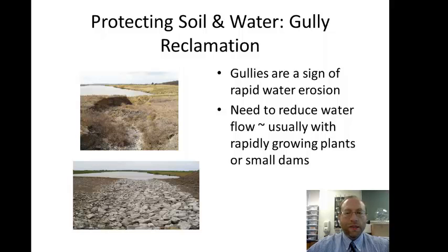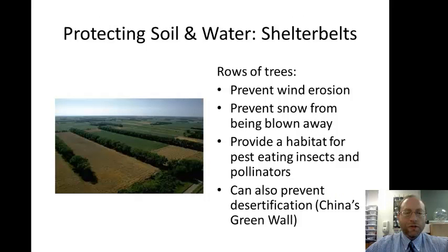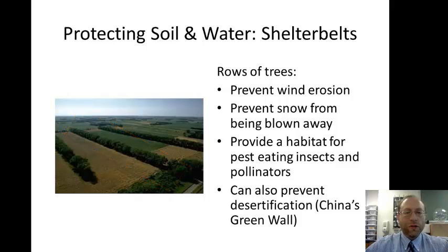When erosion creates gullies—a sign of rapid water erosion—reclamation is important. This can be done by planting rapidly growing plants, building small dams to slow water flow, or literally filling in the gully. Shelter belts are rows of trees that prevent wind erosion, stop snow from being blown away, and provide habitat for pest-eating insects and pollinators. They can also prevent desertification by stopping sand from blowing. China's Green Wall uses shelter belts as one tool to slow the expansion of the Gobi Desert.